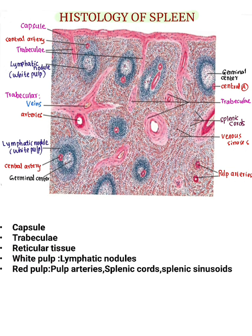The spleen is composed of white pulp and red pulp. Numerous lymphatic nodules together constitute the white pulp, which is surrounded by red pulp. Lymphatic nodules consist of a germinal center and a central artery. The central artery is located in the periphery of the nodule — it is eccentric in position, not present in the center of the nodule.